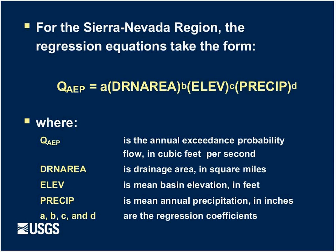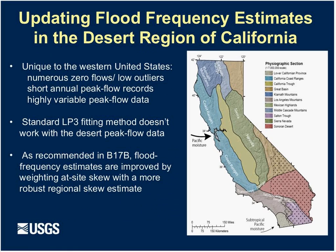For the Sierra Nevada, we found that adding elevation improved the equations, especially for lower-elevation basins where drainage area and precipitation alone were not adequately predicting flood magnitudes. So we included elevation in the Sierra Nevada equation to get better estimates at lower elevations. I'll now turn it over to Nancy, who will talk about the desert region.